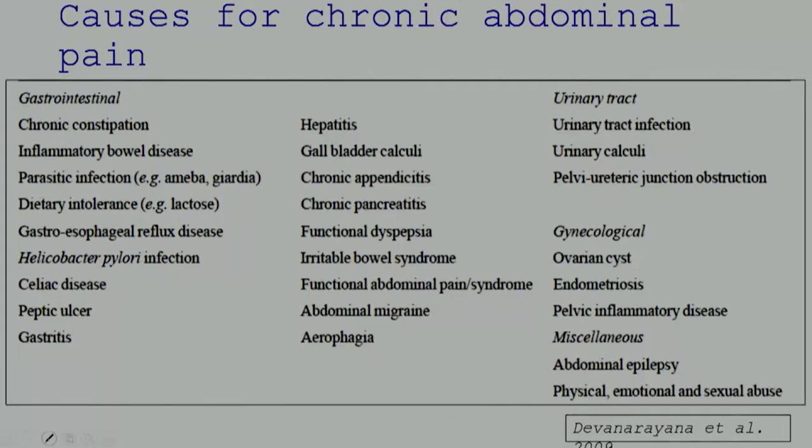What causes abdominal pain? Many diseases can cause chronic abdominal symptoms — these can be organic and non-organic. When we embarked on research in this area, it was my wife who started this. When we looked at a large cohort of children with abdominal symptoms and investigated them thoroughly to find organic causes, we found that only roughly 10 percent of them had an organic disease that could explain their symptoms.